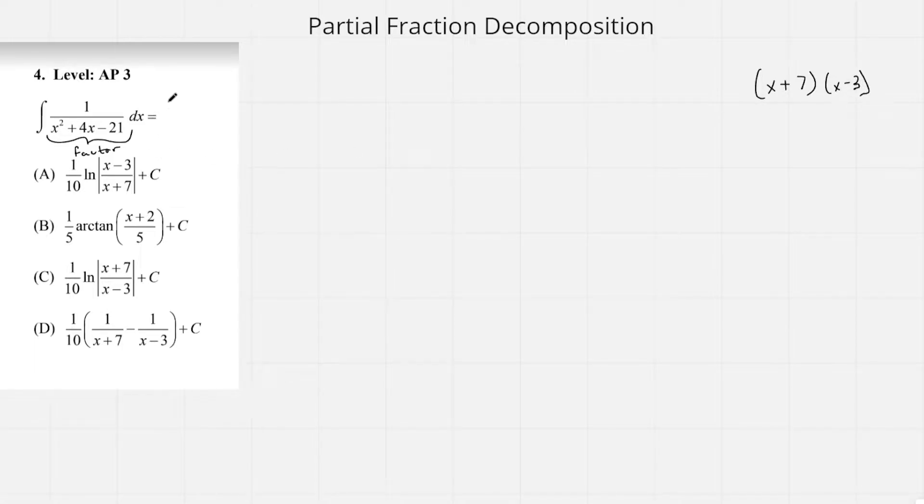The form for partial fraction decomposition is going to be some constant A over whatever the first factor is, plus some constant B over whatever the second factor is going to be. And now we're going to be able to find what A and B are.